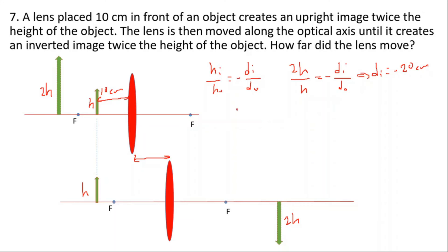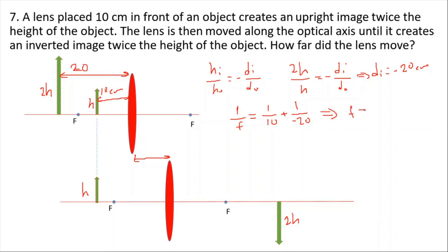From the first condition we calculate the focal length: 1/f = 1/10 + 1/(-20). The image distance is negative 20 centimeters because it is on the same side as the object. After calculations, the focal length f equals 20 centimeters.